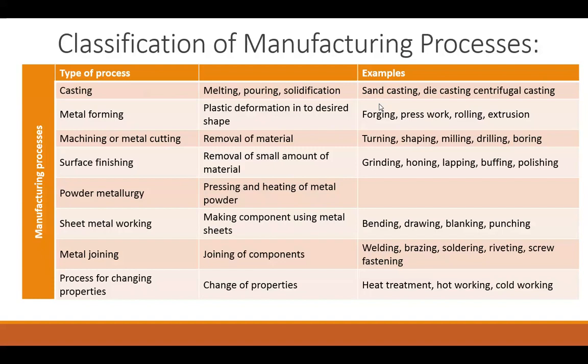The next one is the Metal Joining Process wherein different components are joined together to form a single component. Welding, brazing, soldering, riveting, and screw fastening are the different techniques used for metal joining operations.